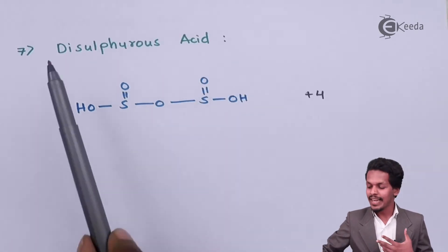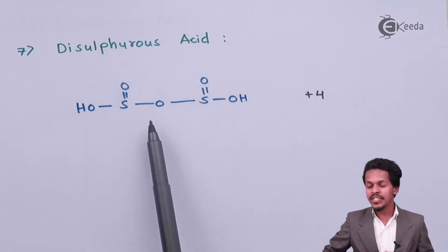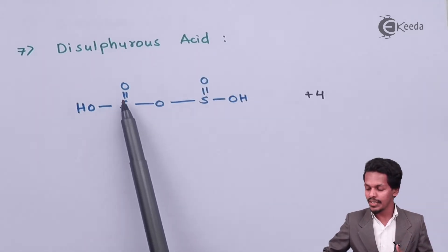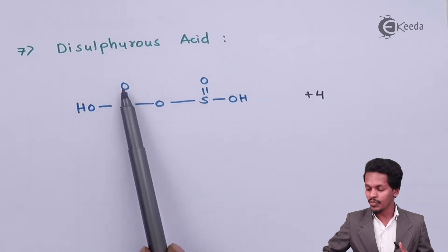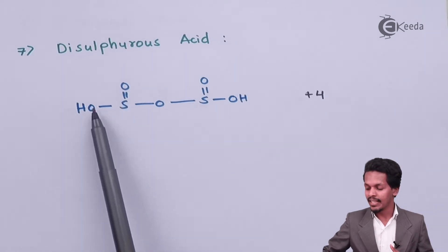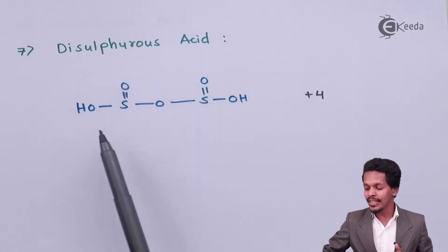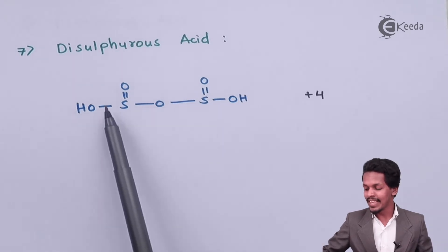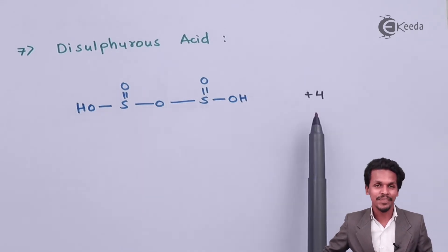Now, dithiophorous acid. This is very similar to the previous one. Sulfur is attached to a double-bonded oxygen and an OH group, and the same group appears on the other side. The key difference is that these two groups are connected via an oxygen atom rather than directly. The oxidation state of sulfur is plus 4.